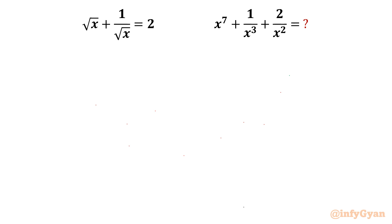Hello everyone, welcome to InfiKyaan. In this very exciting video of algebraic challenging equations, we are going to solve one simplification problem from reciprocal equations. The given equation is square root of x plus 1 over square root of x, equal to 2, and we have to find the expression value of x power 7 plus 1 over x cube plus 2 over x square. So let us get started.